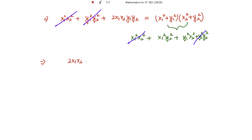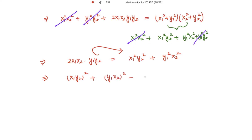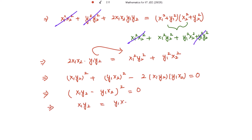We are left with twice of x₁x₂y₁y₂ equal to x₁²y₂² plus y₁²x₂². Taking the left hand side to the right hand side, we get (x₁y₂)² minus twice of x₁y₂ times y₁x₂ plus (y₁x₂)², which is the formula for (x₁y₂ minus y₁x₂)² equal to zero. This means x₁y₂ equals y₁x₂, which further implies y₁ over x₁ equals y₂ over x₂.